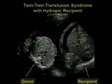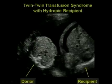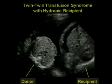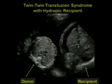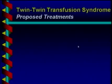Another indication of bad prognosis with twin-twin transfusion syndrome is when the recipient twin is hydropic. Here, small abdomen and big abdomen with all the findings of twin-twin transfusion syndrome, but on top of that there's ascites in the larger, recipient twin. This is twin-twin transfusion syndrome with a hydropic recipient — a very high risk situation.